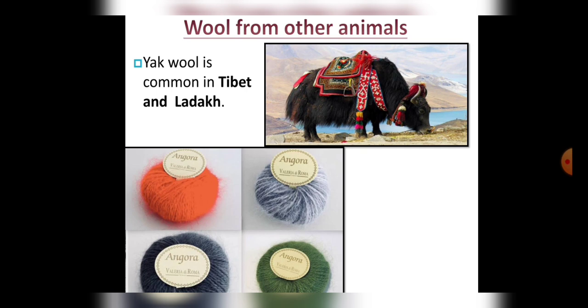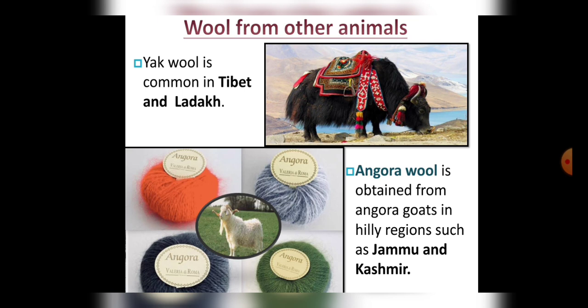Now look at this picture. These shiny varieties of wool are obtained from the Angora goat, which is found in Jammu and Kashmir. This type of wool is known as Angora wool. In the given picture you can see an Angora goat found in the hilly region of Jammu and Kashmir.